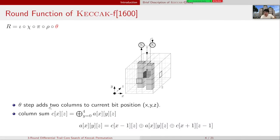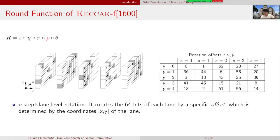Theta step adds two columns to the current bit position. The rho step is the lane-level rotation. It rotates the 64 bits of each lane by a specific offset, which is determined by the coordinates X, Y of the lane.